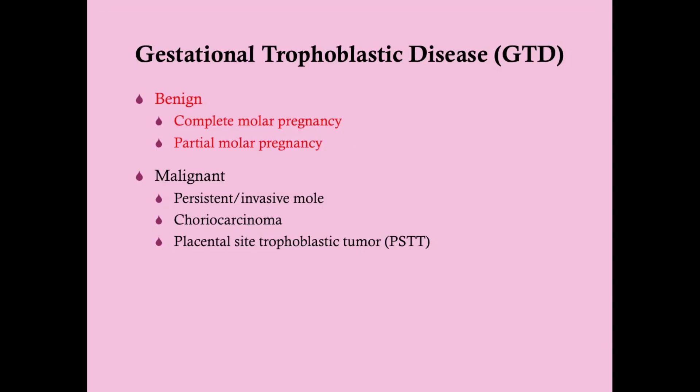We're going to talk about complete molar pregnancy and partial molar pregnancy, saving the malignant manifestations of GTD for another section. When GTD presents, it tends to present as a benign disease. 75% will present as benign, and out of those, 9 out of 10 times it will be a complete molar pregnancy. Partial molar pregnancy is somewhat more rare.